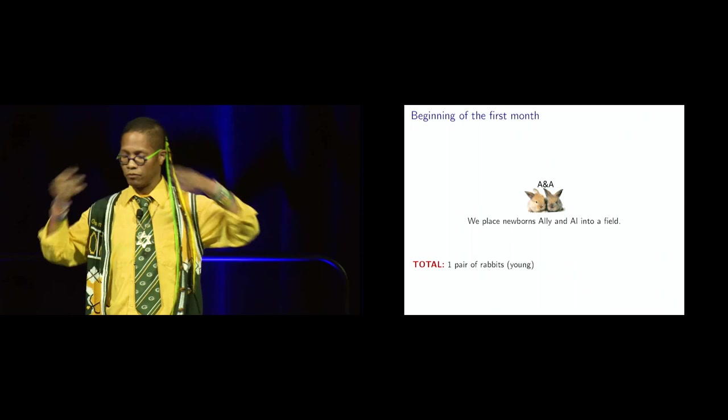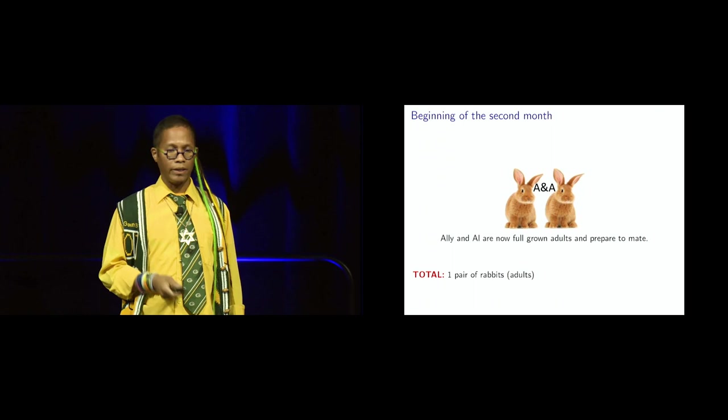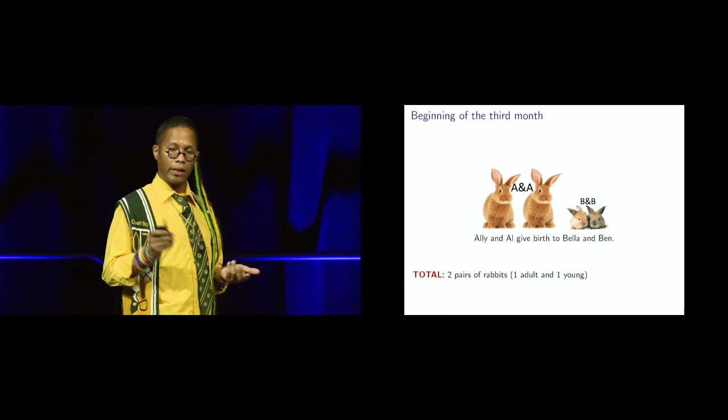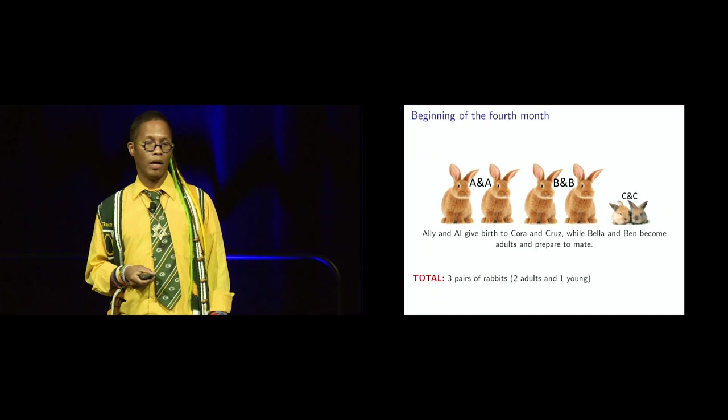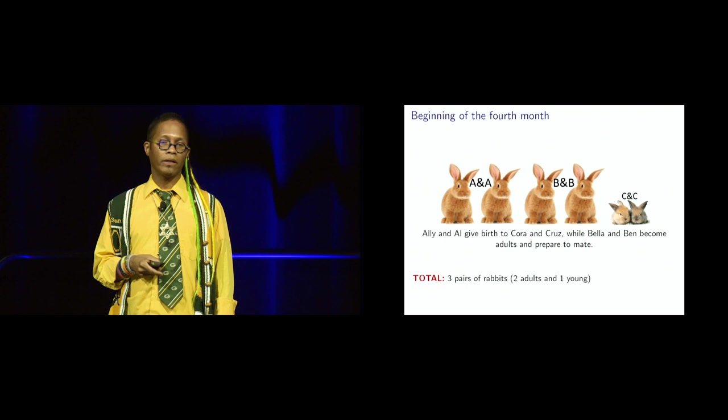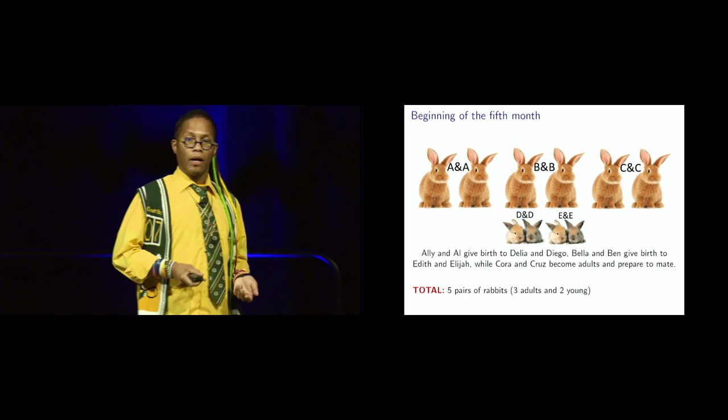So a month later, they grow up to become adults. And there they are, grown up. Notice their fur changed a little, I think. Yeah. Oh yeah, but that happens. You know, sometimes you give birth and the kids got like, I had straight hair, because my mom's Filipino and my dad's kidding me. But things change as you grow up. So here's Allie and Al. They're full grown adults. They're prepared to mate. So the second Fibonacci number is also one. The third month, Allie and Al give birth to their proud children, their Bella and Ben. So now we have Fibonacci number three.